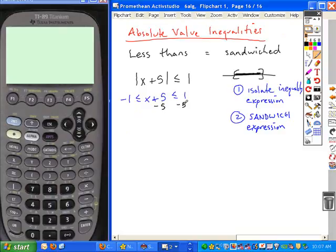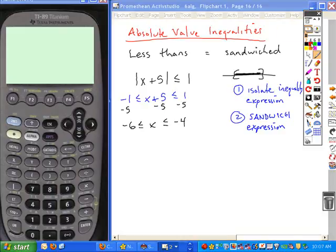So we're going to subtract 5 from all parts and simplify what we have. In this case, we have our simplified solution.